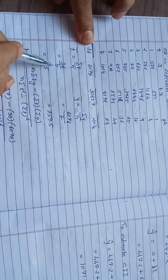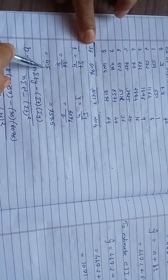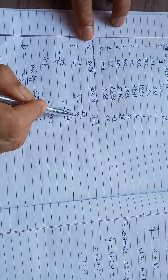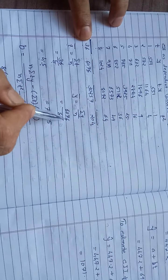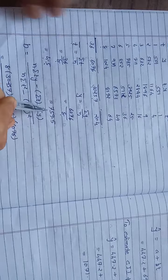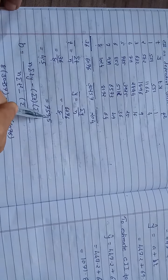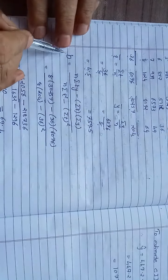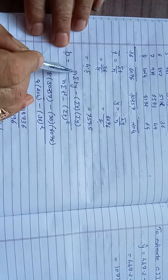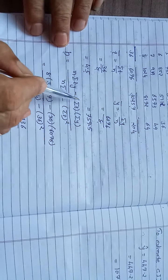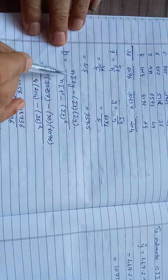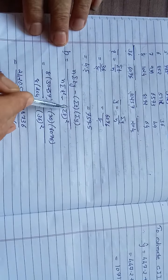t-bar is equal to sigma t upon n. Sigma t is 36 upon 8, so that is 4.5. y-bar is equal to sigma y upon n: 6076 upon 8, which is coming 759.5. Now we will calculate b according to formula: n sigma ty minus sigma t into sigma y divided by n sigma t square minus sigma t bracket square.